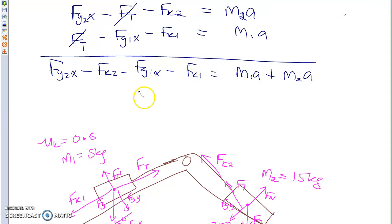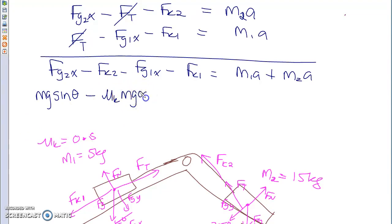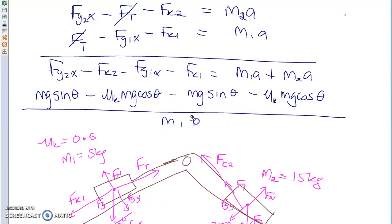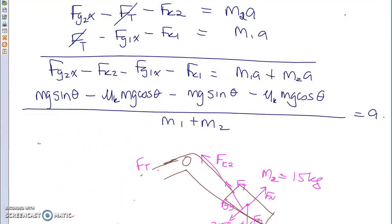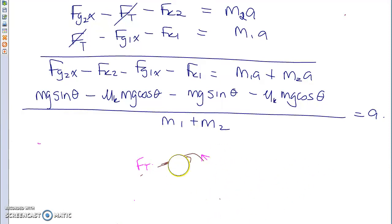Remember this? You better. FGX is MG·sin(θ) — the biggest mistake people make is forgetting the G. FK is mu_k times FN, which is MG·cos(θ). So you'd have M2G·sin(θ2) − mu_k·M2G·cos(θ2) − M1G·sin(θ1) − mu_k·M1G·cos(θ1), divided by M1 + M2, which gives you the acceleration. This is what you're going to be expected to do on the exam. The last thing was inertial and non-inertial frames of reference — I'll leave that for Chapter 3 since we don't have time now.